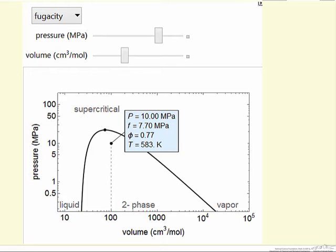The simulation provides an option where you can look at isotherms instead. But the point is, as you move this point around by moving the sliders, you can see dramatic changes in fugacity.